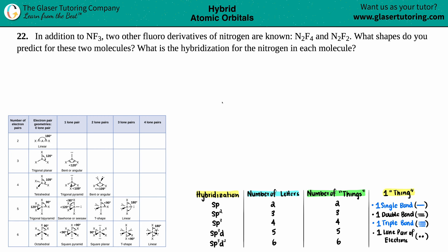Number 22. In addition to NF3, two other fluorine derivatives of nitrogen are known: N2F4 and N2F2. What shapes do you predict for these two molecules, and what is the hybridization for the nitrogen in each molecule?